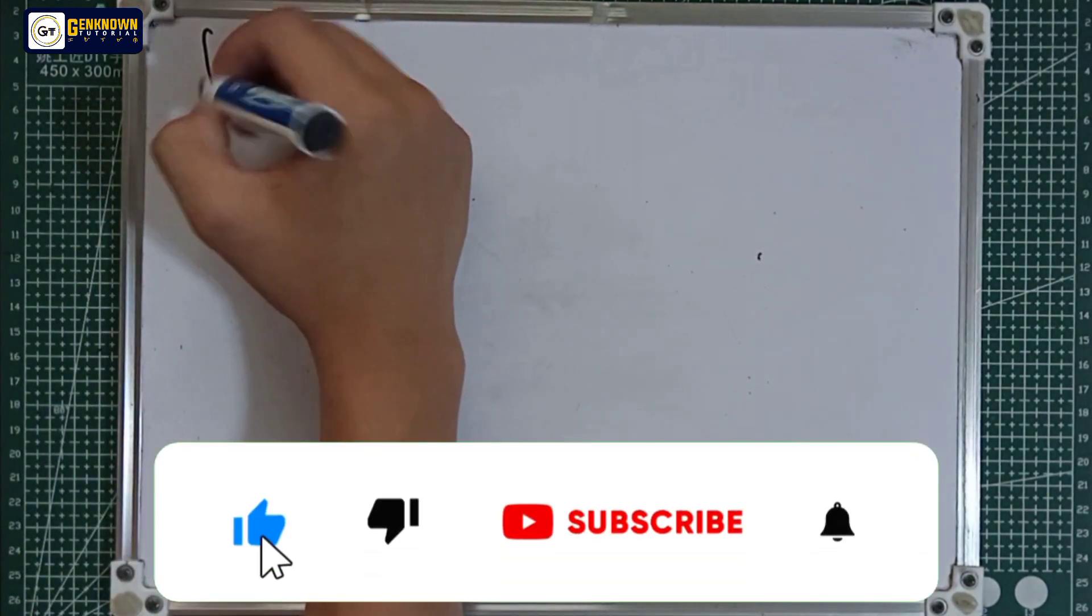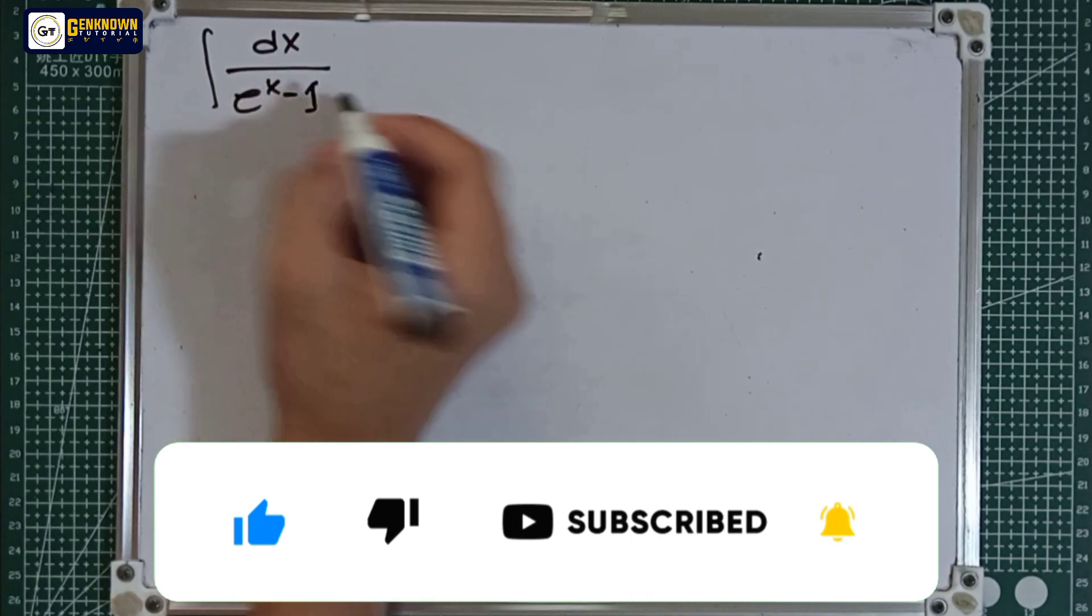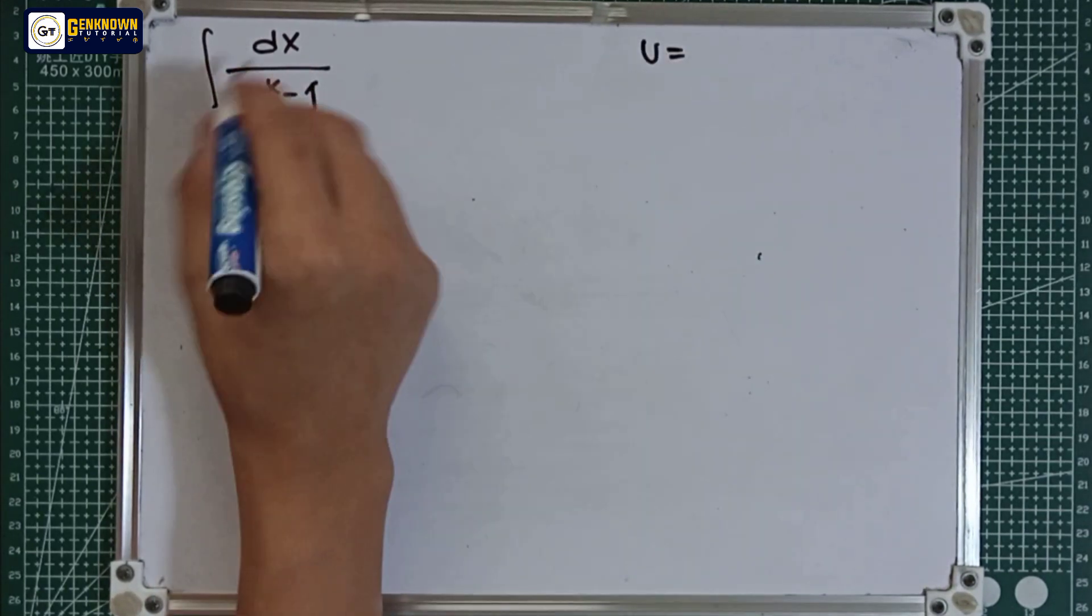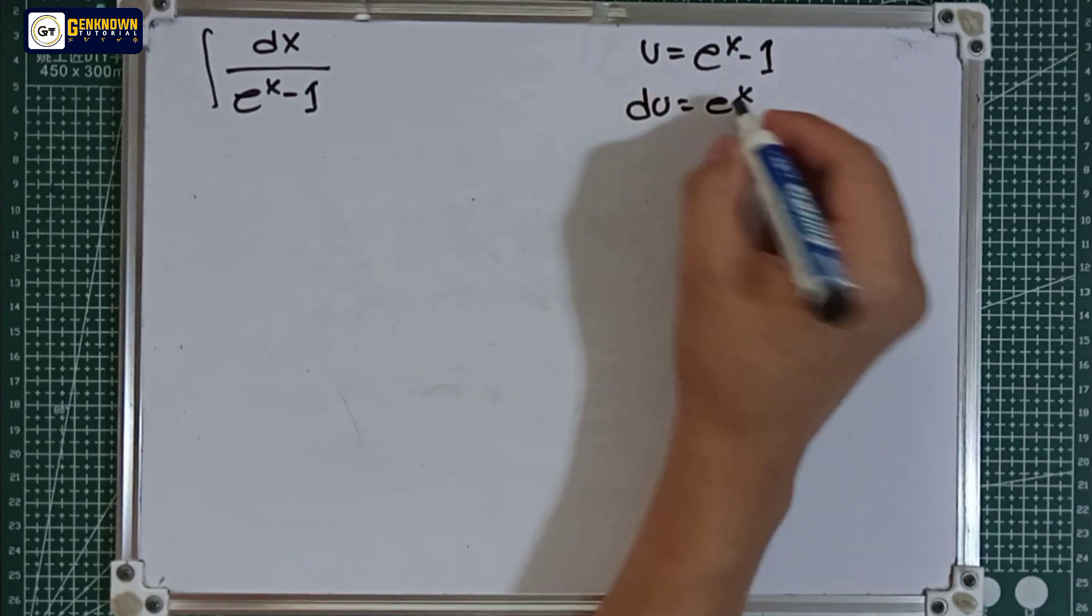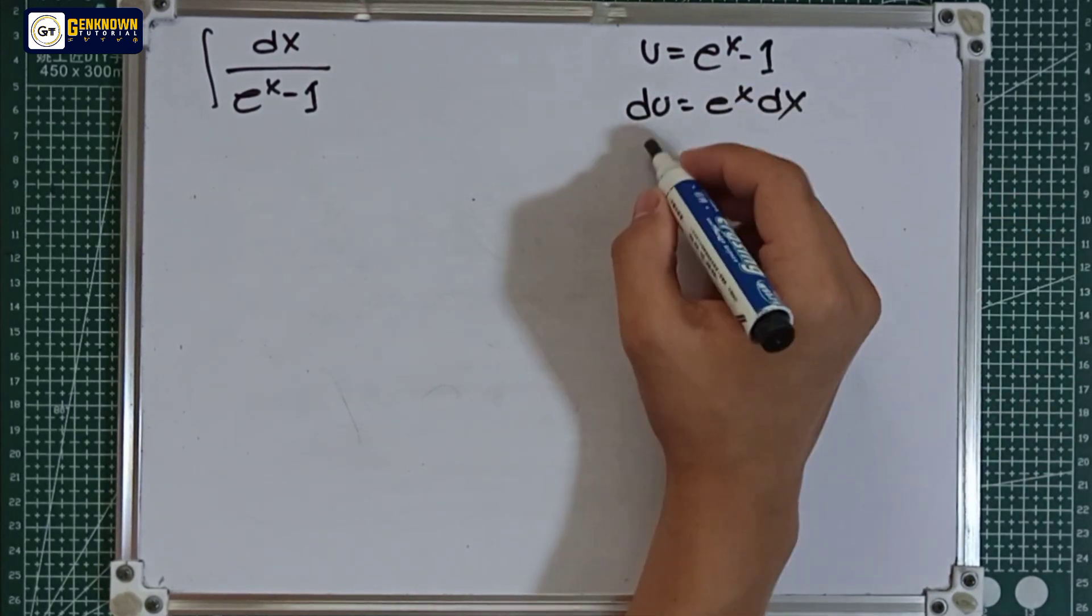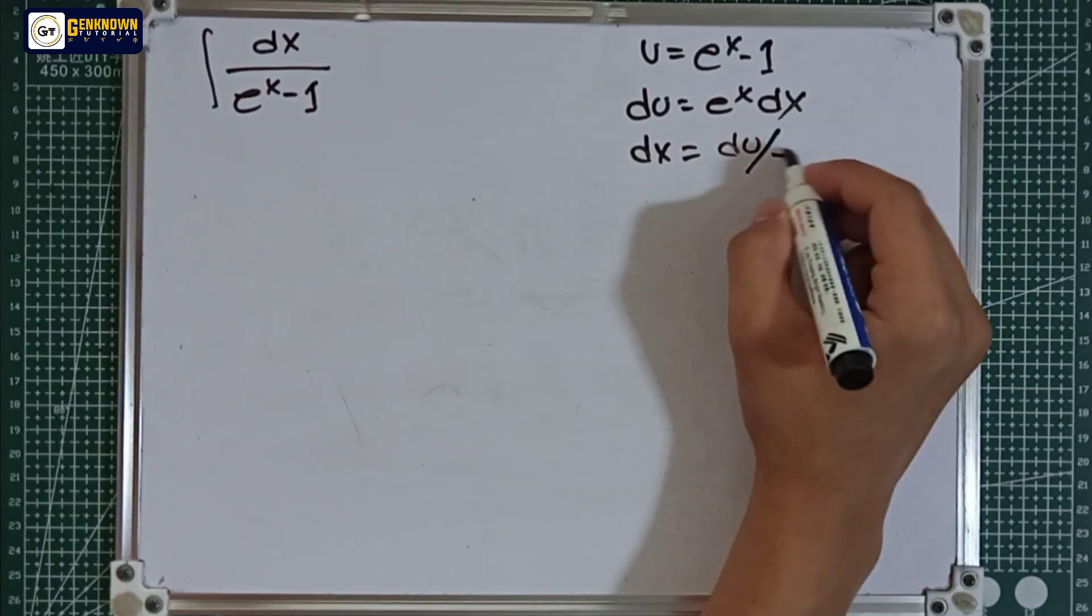Number 11, we have the integral of dx over e raised to x minus 1. Let u equal to the denominator derivative. So the value of dx is equal to du over e raised to x.